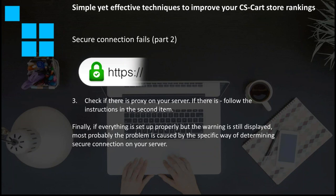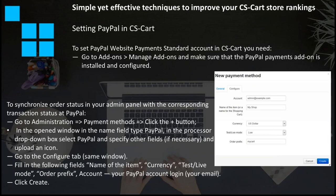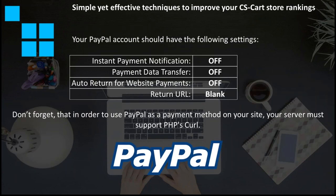Now moving on to the third CS-Cart issue. One of the most popular payment systems is PayPal — a safe and fast way to send money, make payments, receive money, or set up merchant accounts. How can you set up PayPal on your CS-Cart store? You need an add-on which can be switched on in your CS-Cart admin panel. Here is the instruction. And please remember: in order to use PayPal as a payment method on your site, you must support PHP's curl.